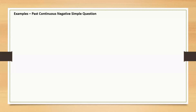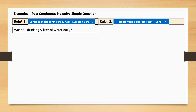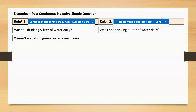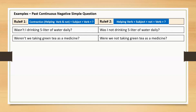Examples of past continuous negative simple question. Rule 1: Wasn't I drinking 5 litres of water daily? Same message using rule 2: Was I not drinking 5 litres of water daily? If we use the full form instead of a contraction, the negative word 'not' is placed before the main verb. Similarly — Weren't we taking green tea as a medicine? Were we not taking green tea as a medicine?